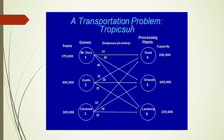In this graph, it tells us about the connection between groves and processing plants. Tropic Sun has three groves in Mount Dora, Eustace, and Claremont — for convenience, we call them location 1, 2, and 3. On the other side, Tropic Sun has three processing plants in Ocala, Orlando, and Leesburg — for convenience, we call them location 4, 5, and 6.